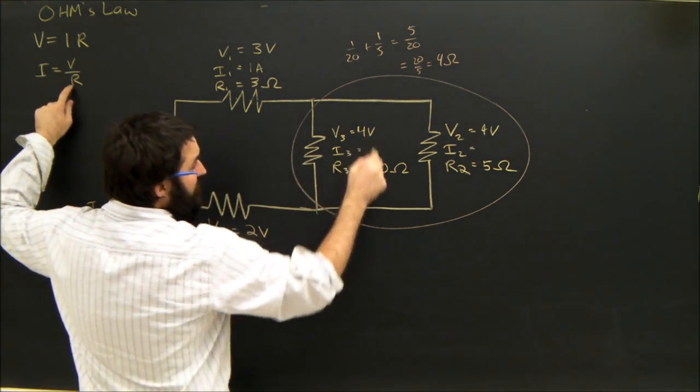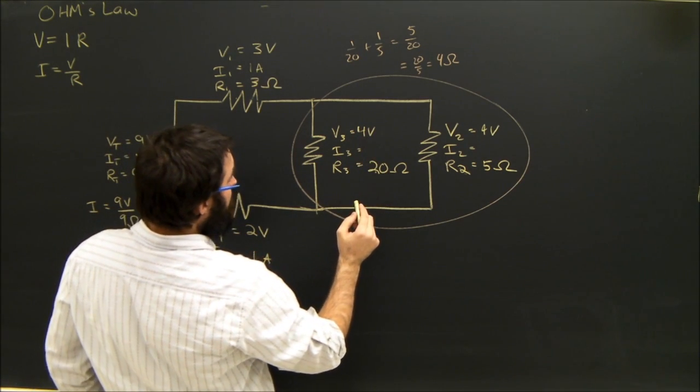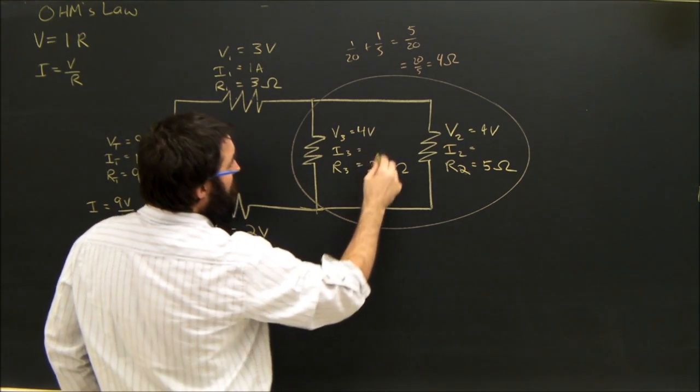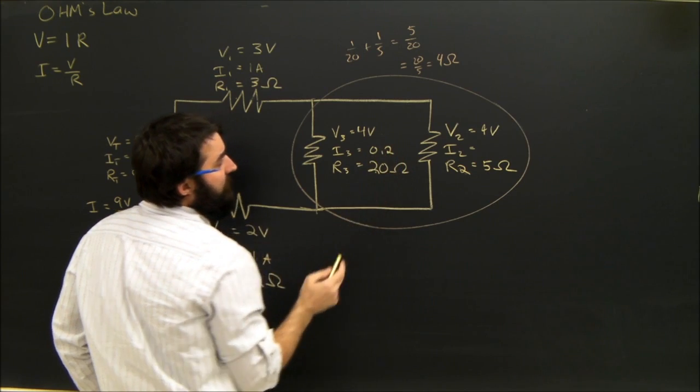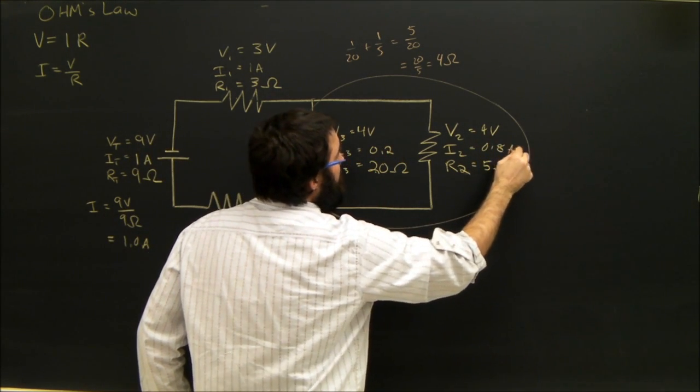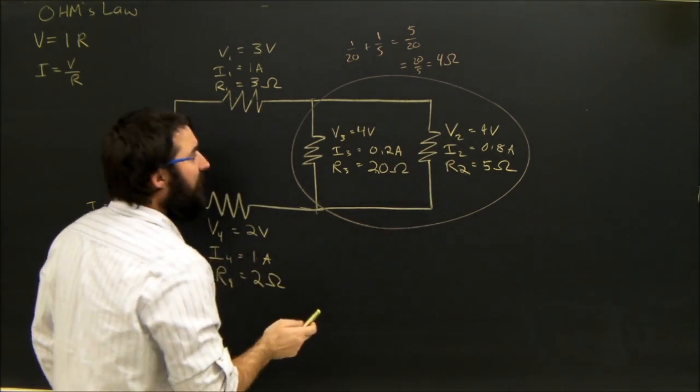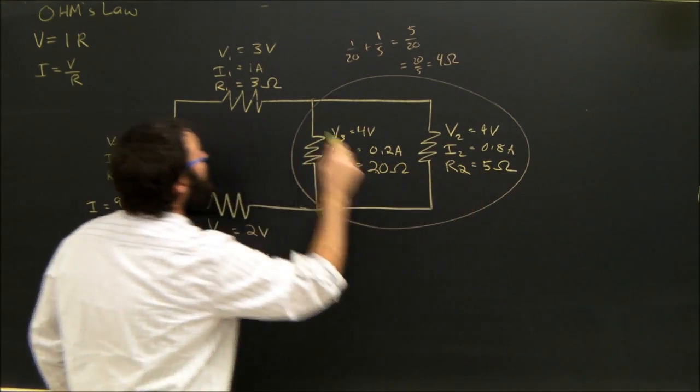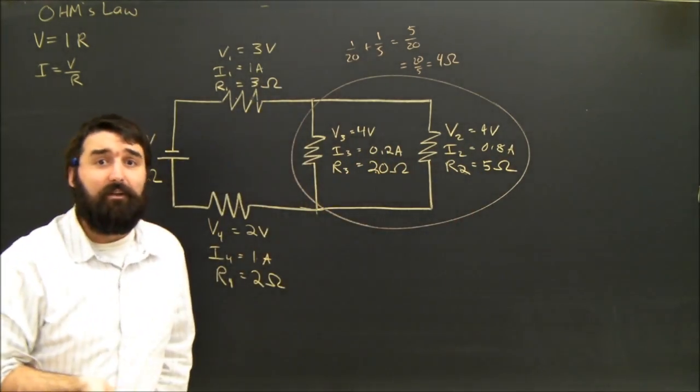So what is I? I is V over R. 4 over 20, which is 0.2 amps. 4 over 5, which is 0.8 amps. And just to double check, 0.2 plus 0.8 equals 1. So that makes a lot of sense.